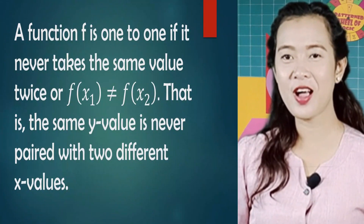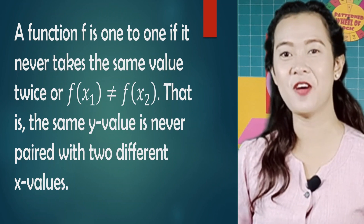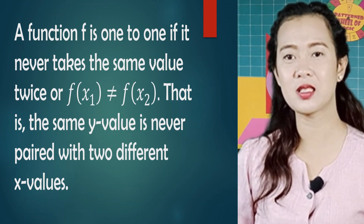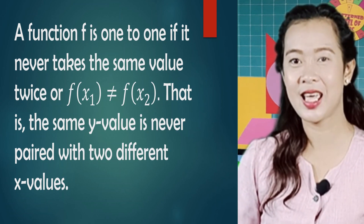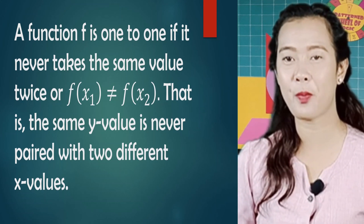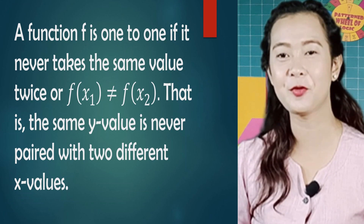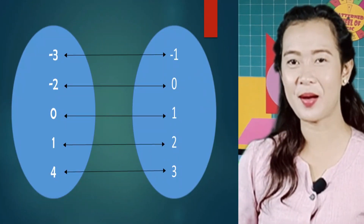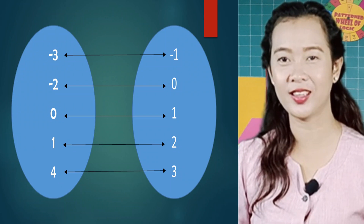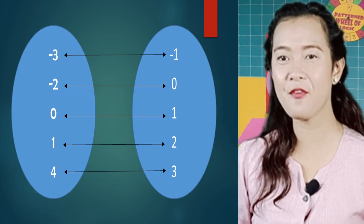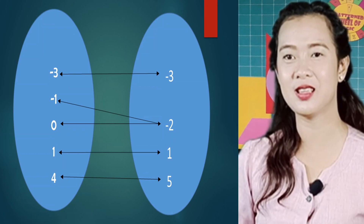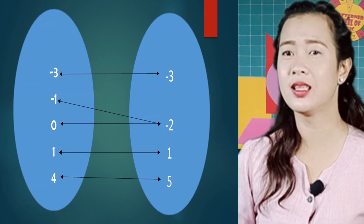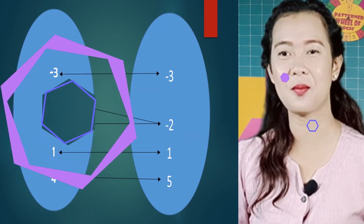Let's define what a one-to-one function is. A function f is one-to-one if it never takes the same value; that is, f(x₁) is not equal to f(x₂). The same y value is never paired with two different x values. In the Venn diagram, function f is one-to-one since no two inputs have a common output. In the second Venn diagram, function f is not one-to-one since the inputs negative 1 and 0 have the same outputs.